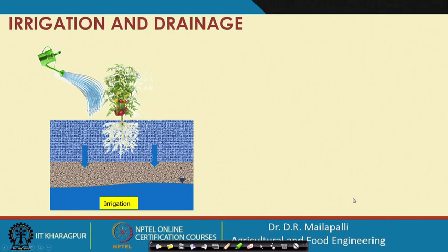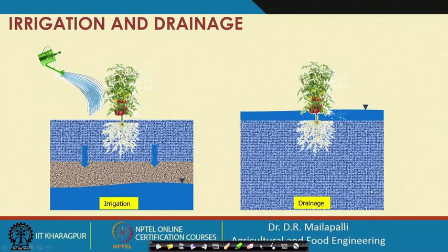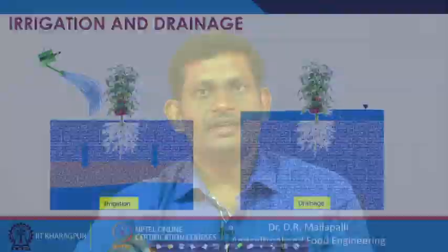Since the water table is deeper, we need to give water artificially on the surface so that it will penetrate into the soil and become available to the plant. In the drainage case, the fields are always ponded with water. In order to grow crops on that land, you need to remove the excess water from the surface.